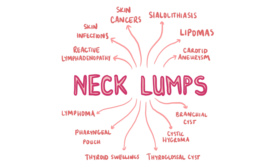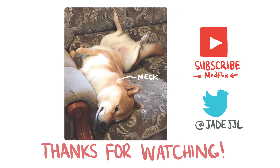If the patient is younger, a few other diagnoses should be included in your differentials for a neck lump. A thyroglossal cyst, for example, is a neck lump commonly found in the midline between the thyroid and the hyoid bone; it moves upwards when the patient protrudes their tongue. A cystic hygroma is a lymphangioma found on the neck, present from birth usually, typically on the left lateral neck. A branchial cyst is a mobile, fluctuant, oval-shaped mass between the SCM muscle and the pharynx.